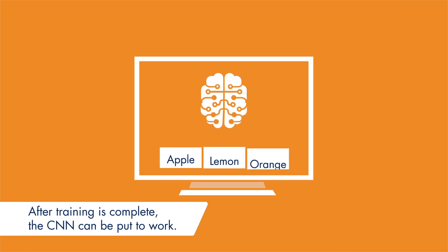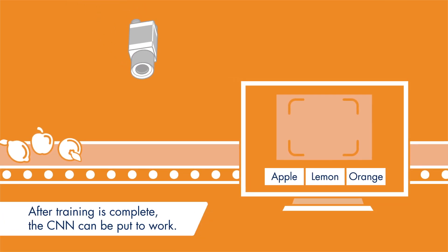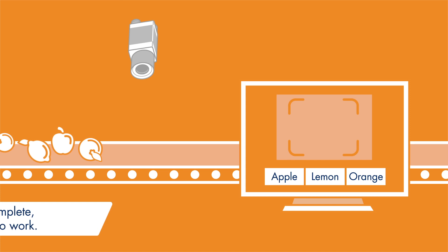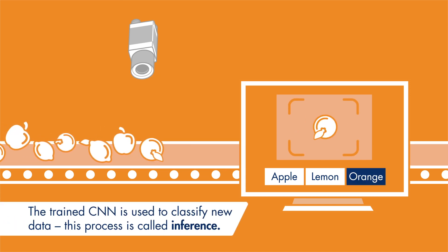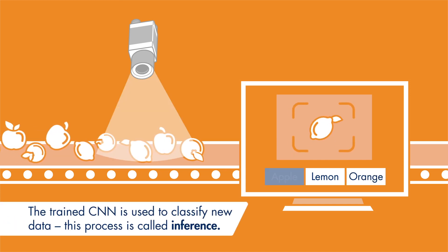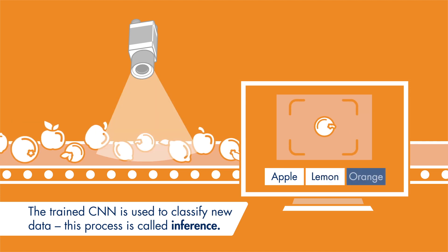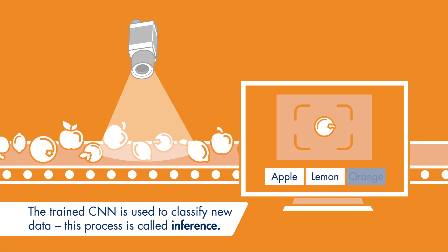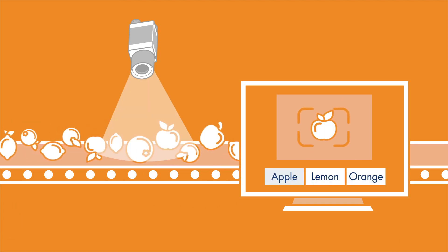Once the CNN has learned to differentiate between the given classes, it can be put to work. Users can then apply the trained CNN to new image data, which the network matches to the classes it learned during training. This process is also called inference.